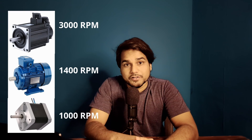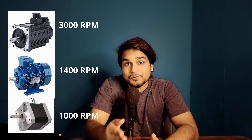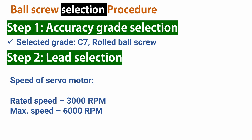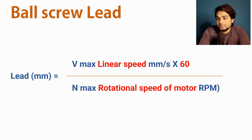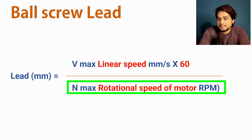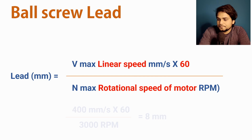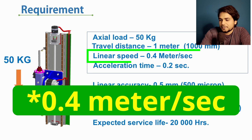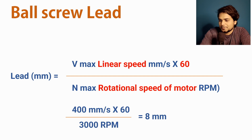Next, we define the motor speed. The type of motor affects this — in this case we will use a servo motor, whose rated speed is generally around 3000 RPM, with a maximum of 6000 RPM. We should always consider rated speed, so motor speed is 3000 RPM. The ball screw lead formula is: Lead (mm) = Vmax (mm/s) × 60 / Nmax (RPM). Putting in values: Lead = 400 × 60 / 3000 = 8 mm. We multiply by 60 to convert RPM (per minute) to per second, since Vmax is in mm/s.